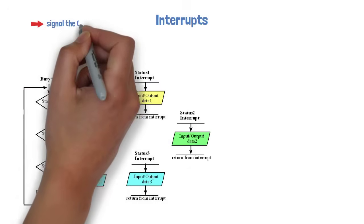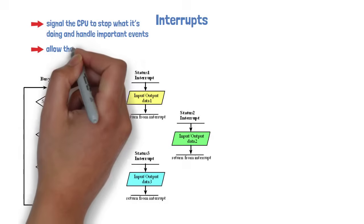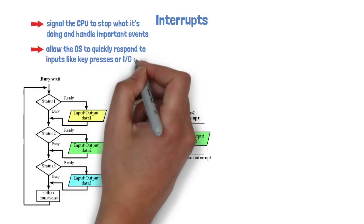Interrupts signal the CPU to stop what it's doing and handle important events. They allow the OS to quickly respond to inputs like key presses or I/O operations.